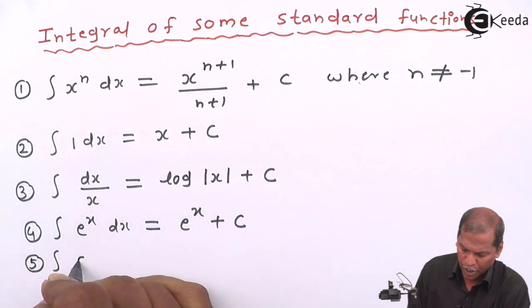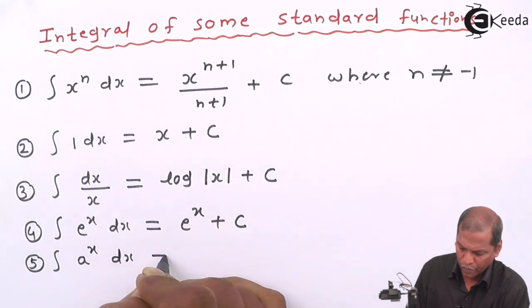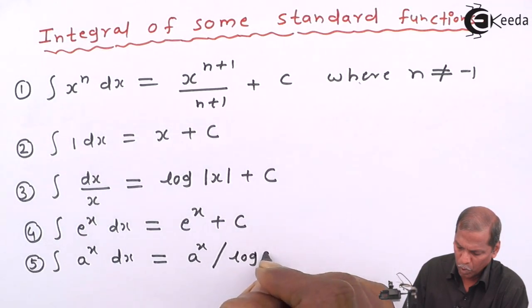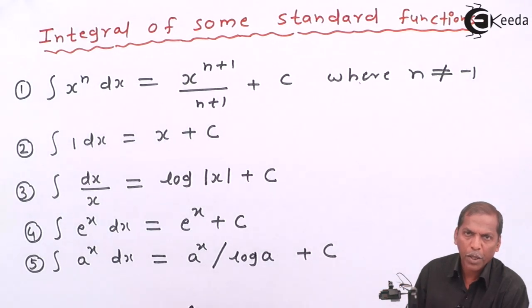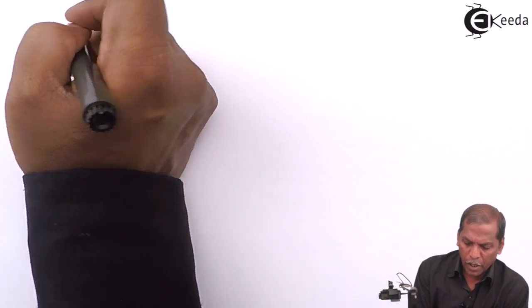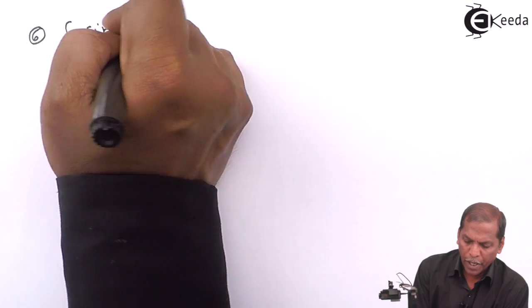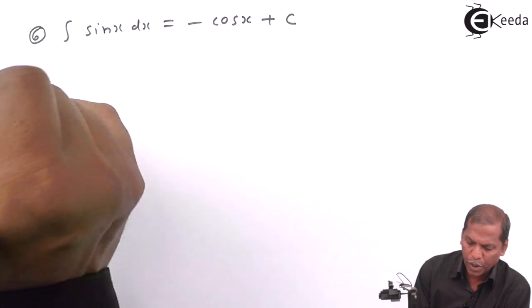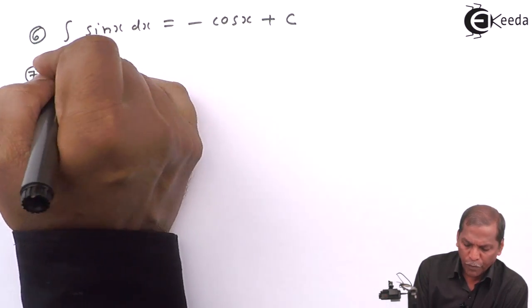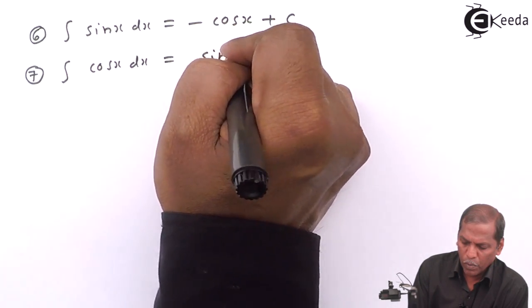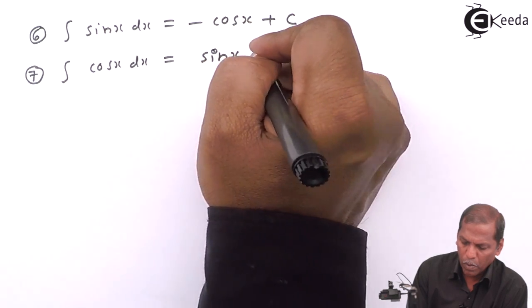Fifth formula: integral a raised to x dx is equal to a raised to x upon log a plus c. Formula number 6: integral sin x dx is equal to minus cos x plus c.